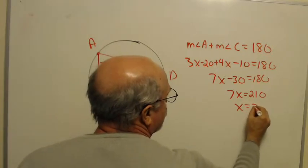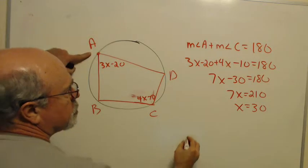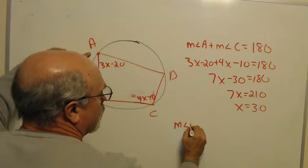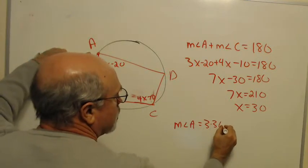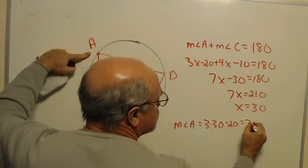X will be 30. If x is 30, then the measure of angle A is 3 times 30 minus 20 is 70.